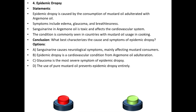Fourth question: Epidemic Dropsy. Statements: Epidemic dropsy is caused by the consumption of mustard oil adulterated with argemone oil. Symptoms include edema, glaucoma, and breathlessness. Sanguinarine in argemone oil is toxic and affects the cardiovascular system. The condition is commonly seen in countries with mustard oil usage in cooking.